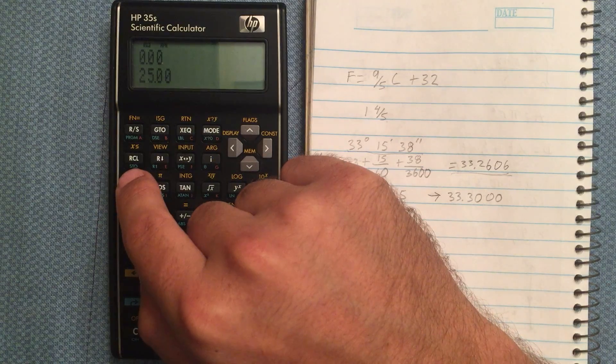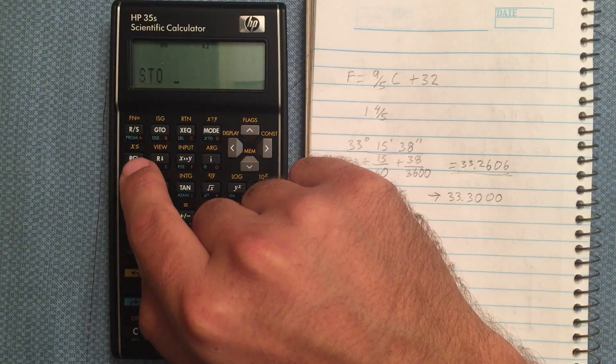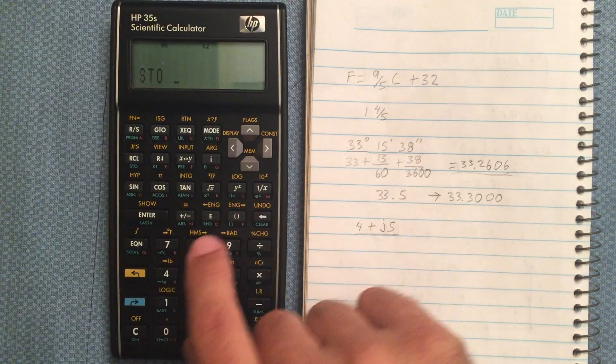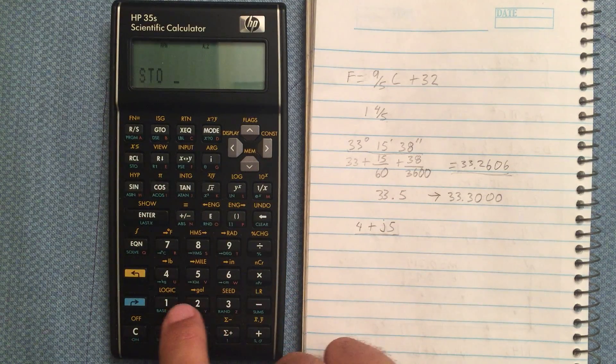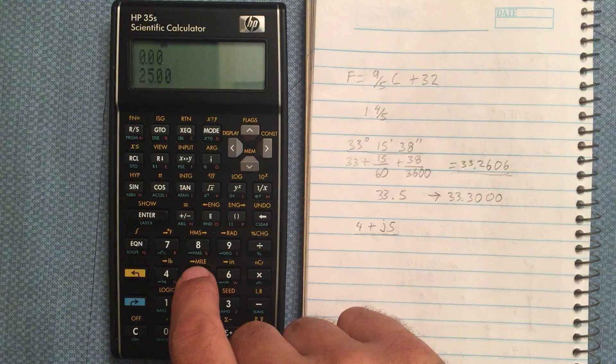I'm going to do the blue shift and then the store button, and it asks me which variable I want to store it in. And it's expecting one of these red labels here. Let's store that in y. Then I continue with my other calculations.